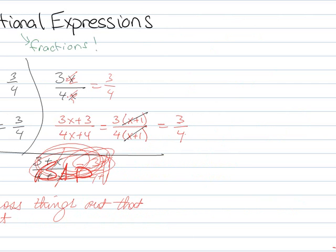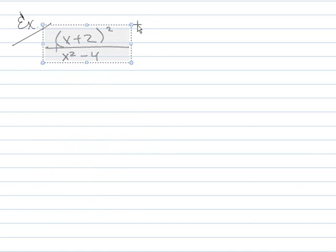So as long as I can factor something out, I can cross something out. So that's kind of where we're going with this. As long as you can factor it out, you can cross it out. So let's go in here and try an actual example. Let's say we've got x plus 2 quantity squared over x squared minus 4.